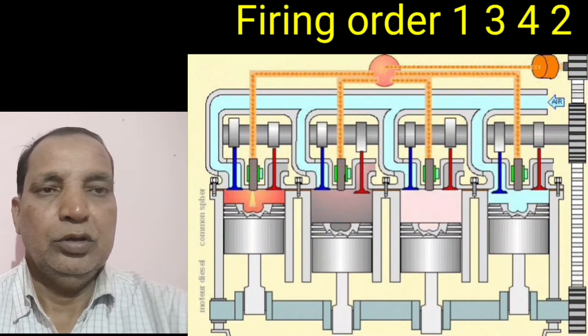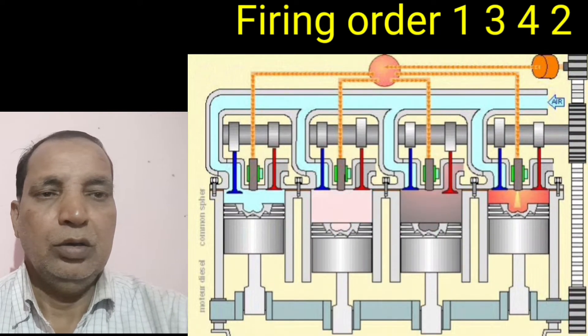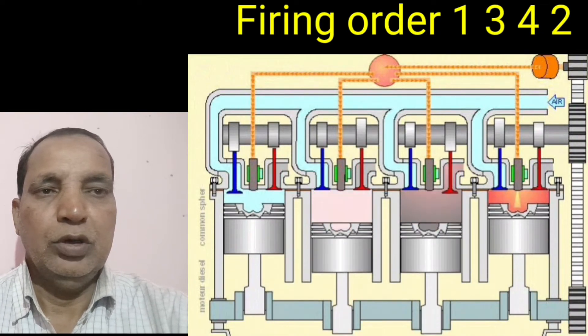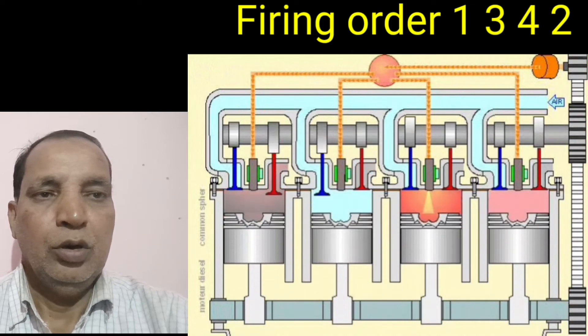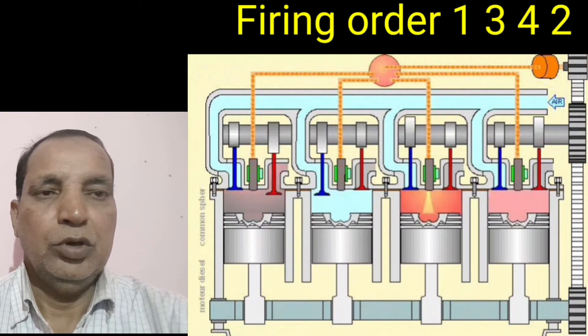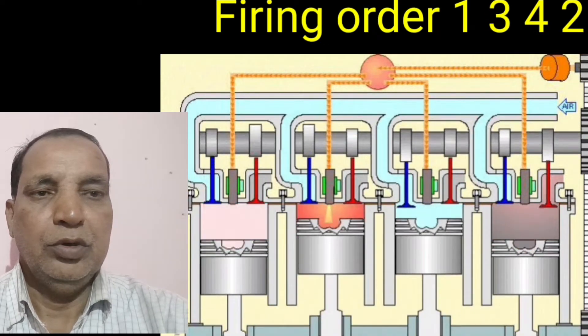This is the systematic system. When you have the 4-cylinder engine, then the firing order is 1, 3, 4, 2. This is the sequence for the firing order of the 4-cylinder engine.